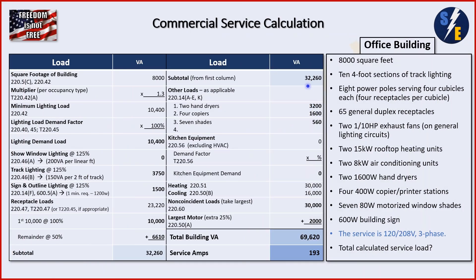Adding up all our bold numbers, we arrive at a total building VA of 69,620 VA. We have a 208 volt three-phase service, so we divide by 208 multiplied by the square root of three. The result is 193 amps — and that is our completed calculation. Once you have all the data, it's just a matter of plugging it in, and you can do a full office building service calculation in just a few minutes.